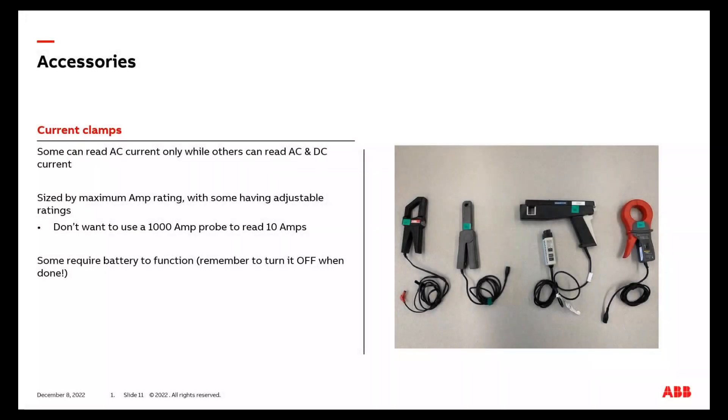The next accessory you'll need to analyze a VFD is a current clamp. Some current clamps can read only AC current, while others can read AC or DC current. Some current clamps require a battery to function, while others do not. If you do have a battery with your current clamp, make sure when done using it to shut it off. Otherwise, when you come back and want to use it again in the future, the battery most likely will be dead. You'll have to go scramble to find a new battery.